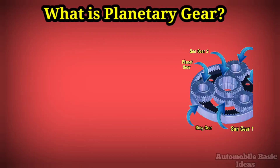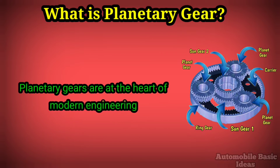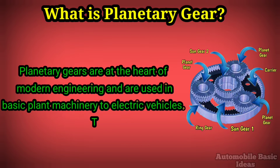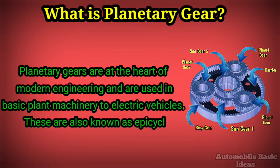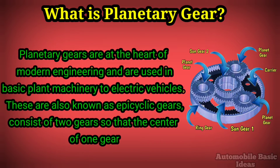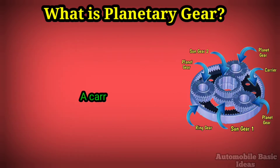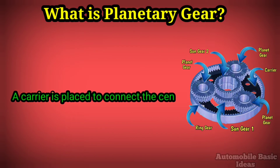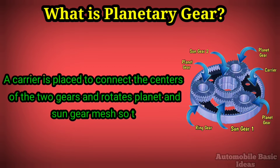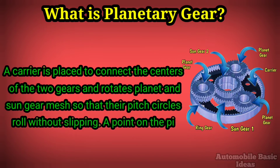What is a planetary gear? Planetary gears are at the heart of modern engineering and are used in basic plant machinery to electric vehicles. These are also known as epicyclic gears, and consist of two gears such that the center of one gear rotates around the center of the other. A carrier is placed to connect the centers of the two gears and rotates so that the planet and sun gear mesh, with their pitch circles rolling without slipping.